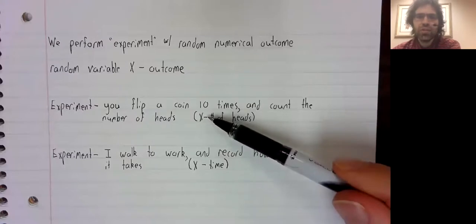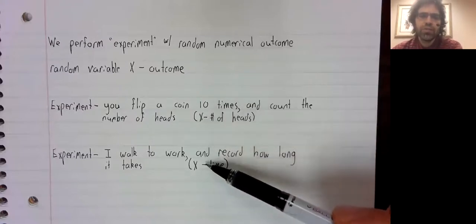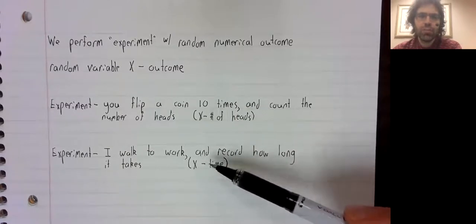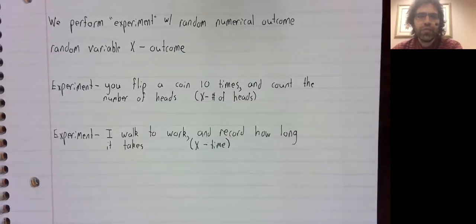This X is a random variable. And this X is a random variable. But there's a difference between them.